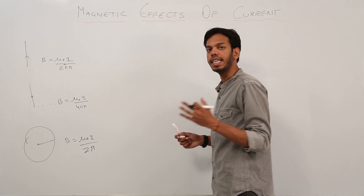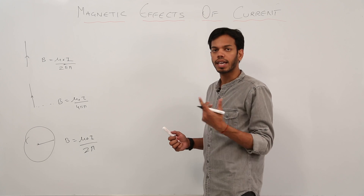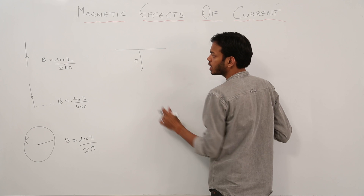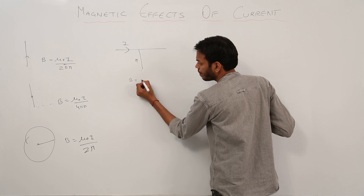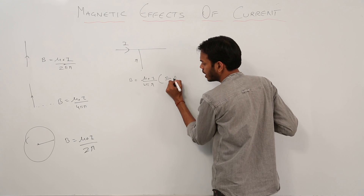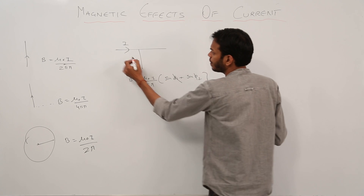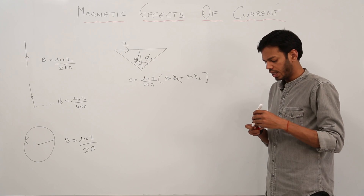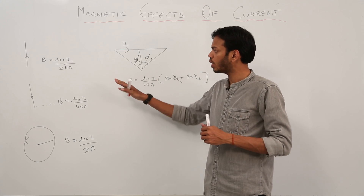What is the general formula for any conductor carrying current I at perpendicular distance R? If this is the point of observation at perpendicular distance R from the conductor carrying current I, the magnetic field would be mu-naught I upon 4 pi R times (sine phi1 plus sine phi2), where phi1 and phi2 are the angles at the two ends. These are the key formulas — let's do a quick application with some examples.